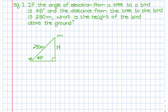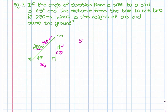In the next example, the angle of elevation from a tree to a bird is 45 degrees, and the distance from the tree to the bird is 250 meters — that's the diagonal distance, which is our hypotenuse. The question asks for the height h of the bird above the ground, which is the opposite side. We label the triangle with hypotenuse, adjacent, and opposite, and since we're using the opposite and hypotenuse, we're going to use sine.